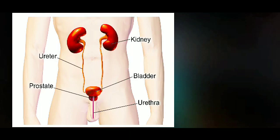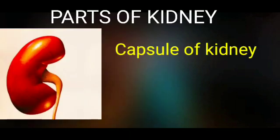For example, the kidney secretes the hormone renin, which regulates blood pressure, and another hormone called erythropoietin, which is responsible for the process of erythropoiesis.